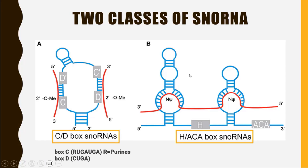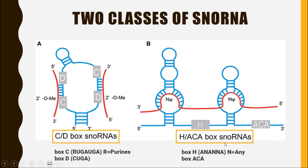On the other hand, the second class, H/ACA box snoRNA, has repetitive units called Box H and Box ACA. Box H has the sequence ANANNA, where N stands for any kind of nucleotide — so it can be guanine, cytosine, adenine, or uracil. Box ACA has the repetitive units ACA.